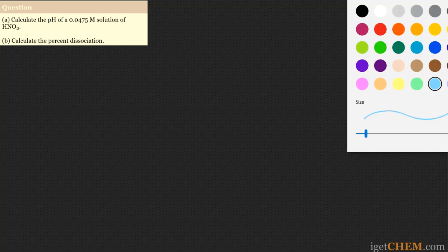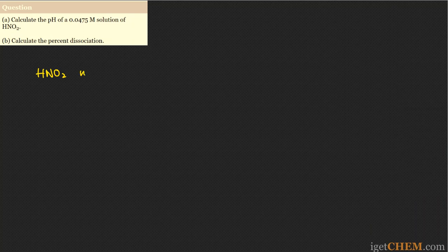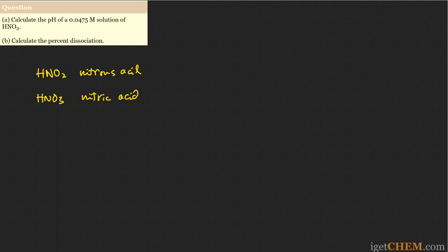We have the acid HNO₂ — nitrous acid. Don't confuse that with HNO₃, which we see quite often, called nitric acid. The difference is that nitric acid is one of the strong acids, whereas nitrous acid is actually a weak acid.